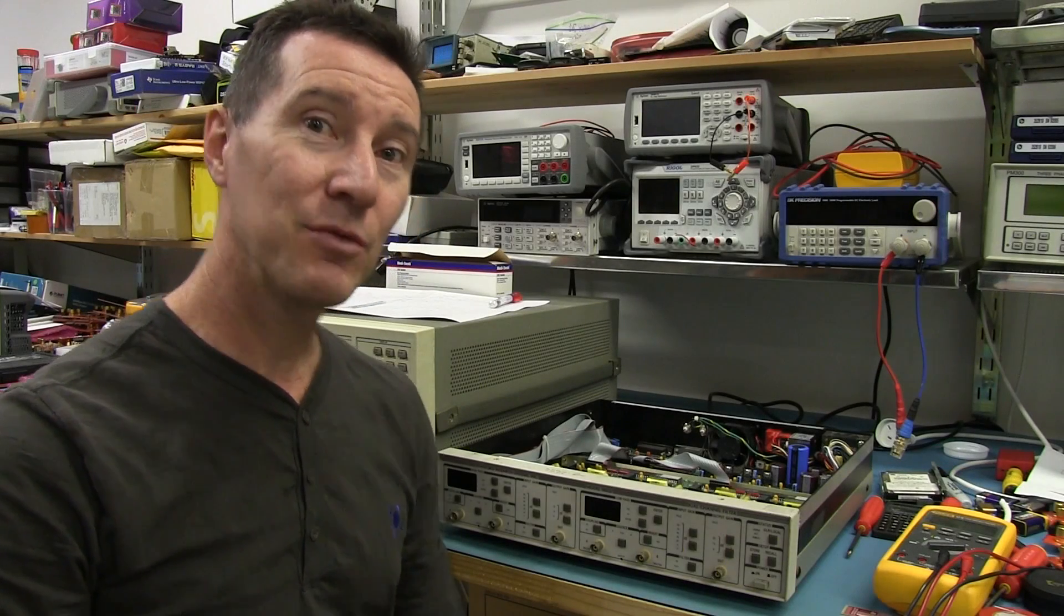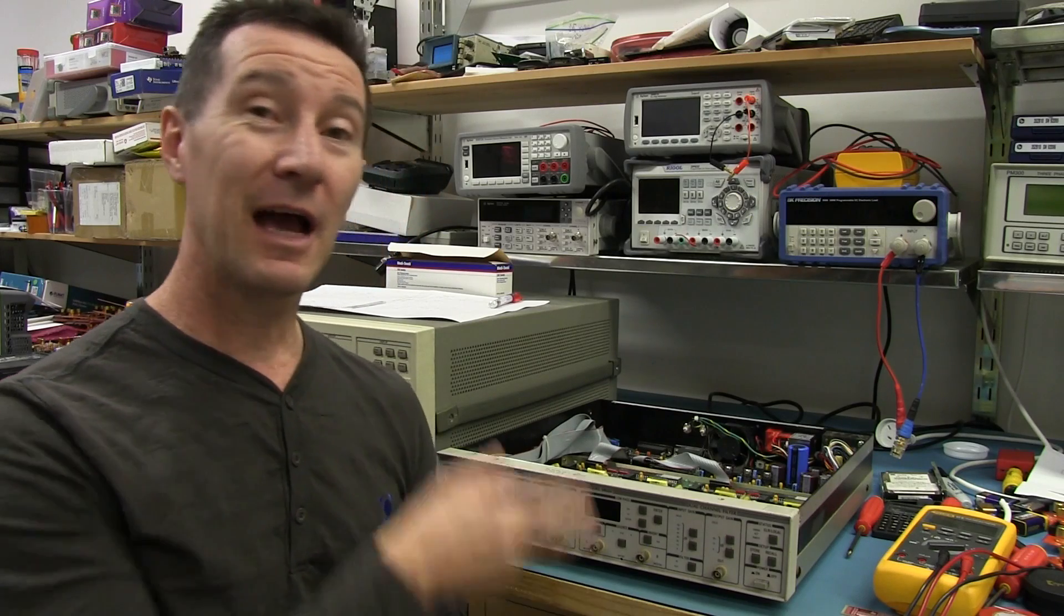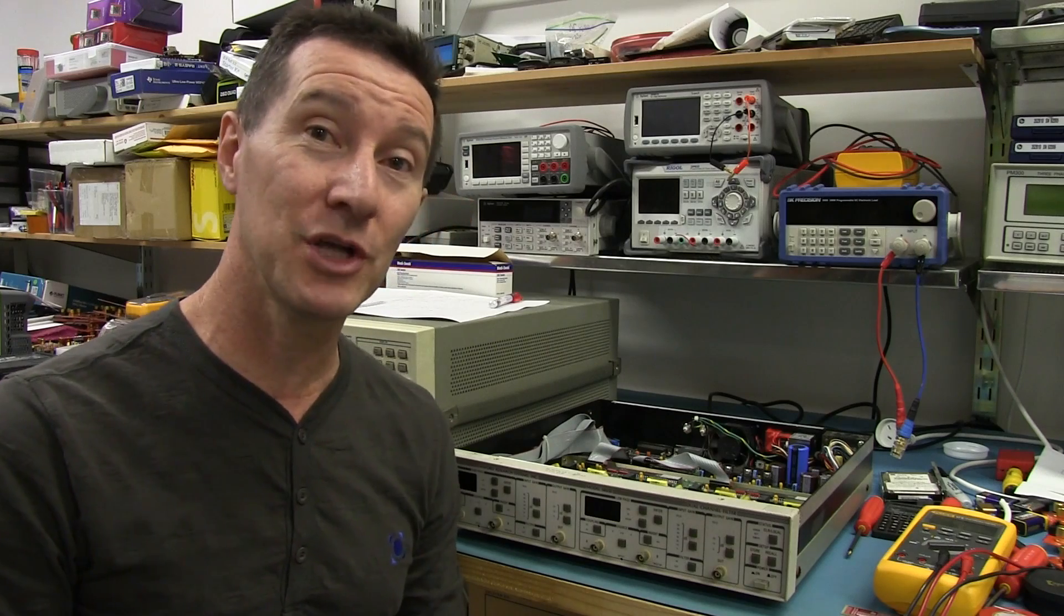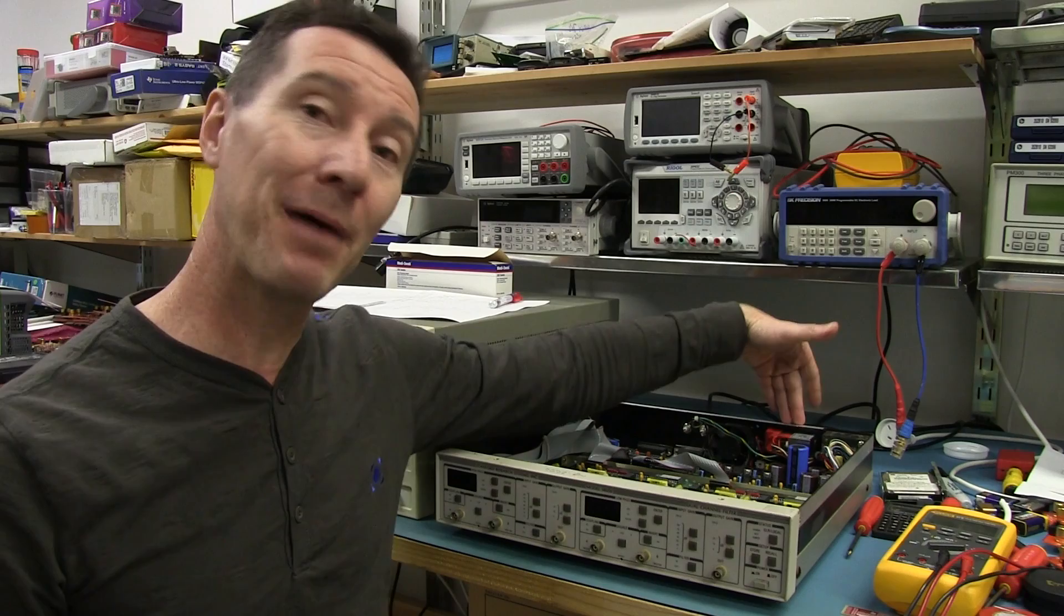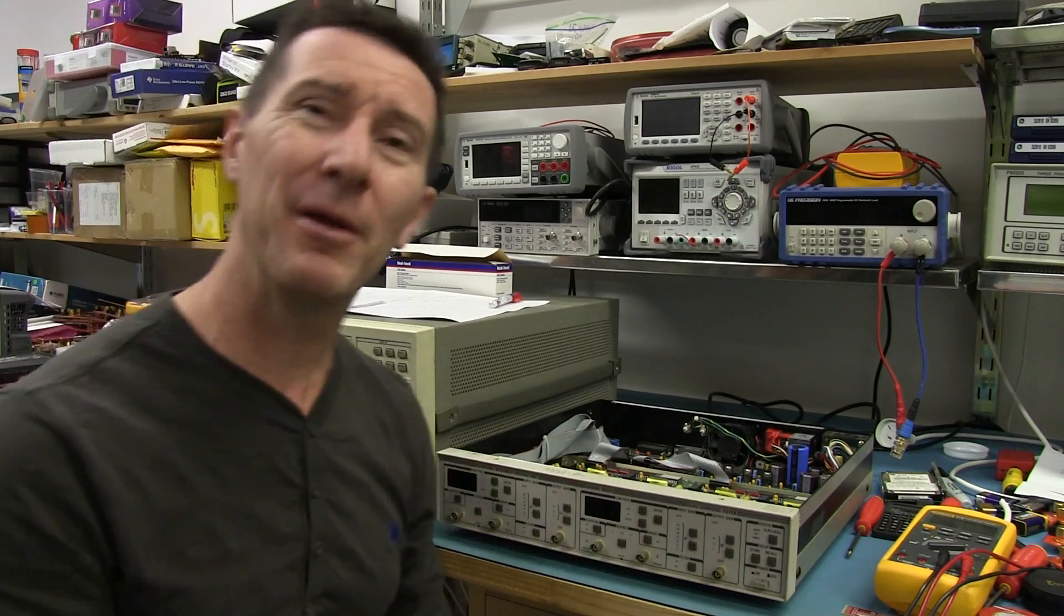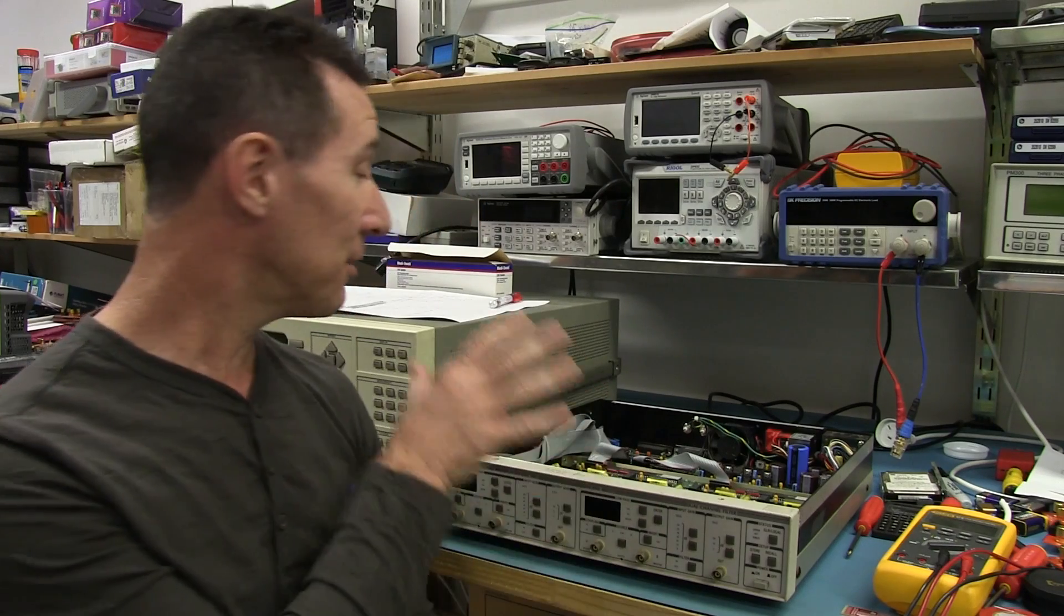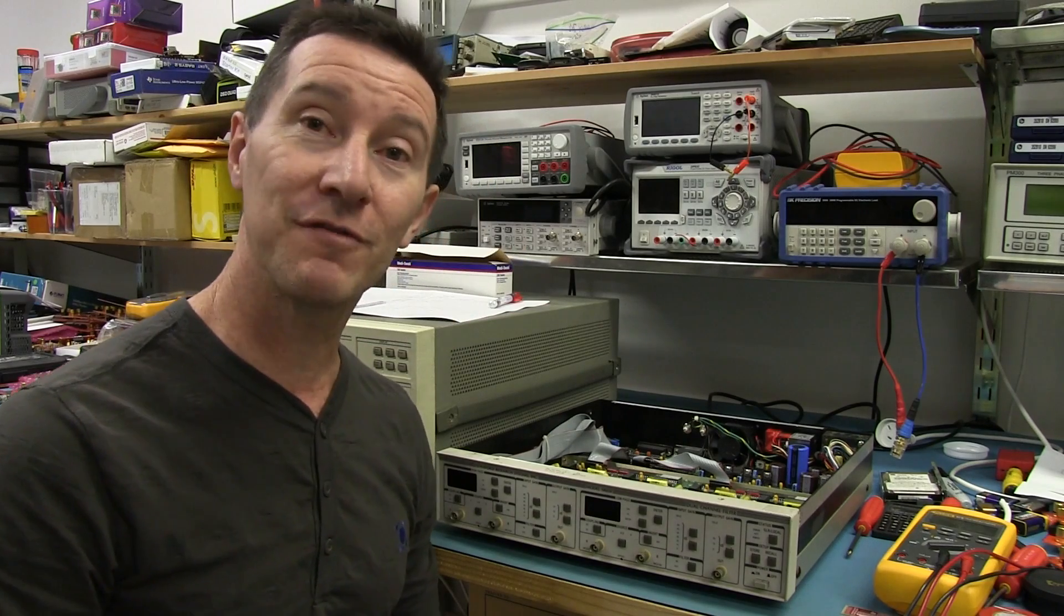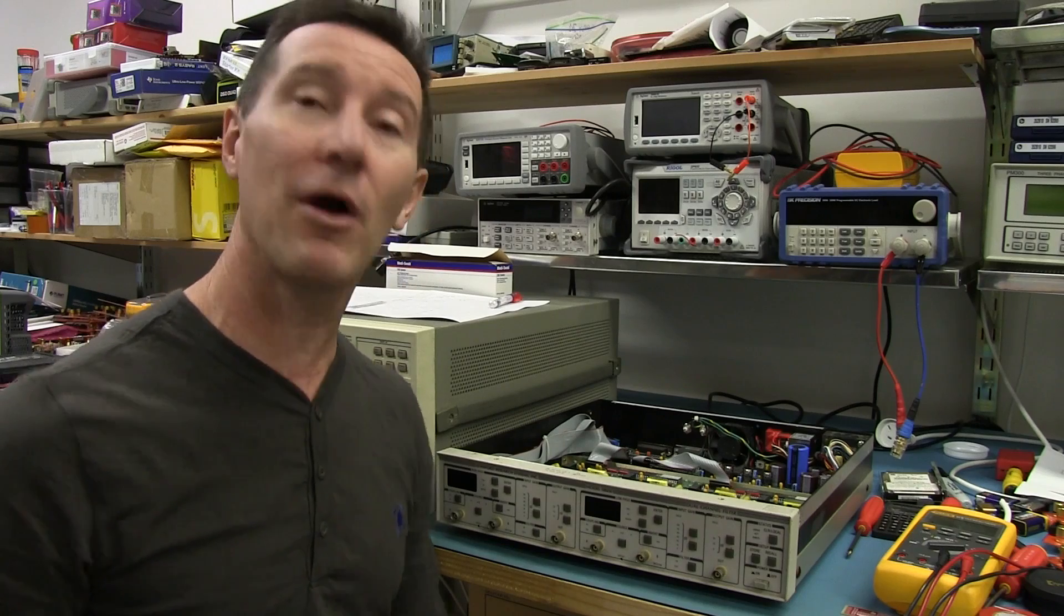Hi, in the previous video we took a look at repairing the Stanford Research SR650 8-pole elliptical filter I scored on eBay real cheap. It turned out to be the mains filter at the back had a failure. Once I fixed that, it powered up and seemed to at least go through the motions. But I was playing around with this after I shot the video, and I noticed a few things that weren't quite right.